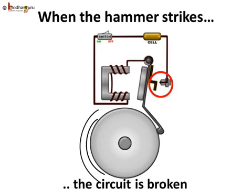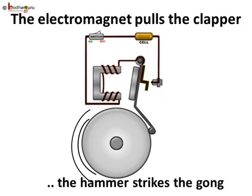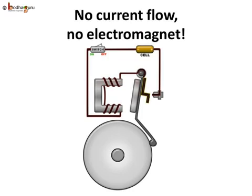So, what will happen next? The current through the coil will stop flowing. Will the coil remain an electromagnet? No, it wouldn't. The coil is no longer an electromagnet.